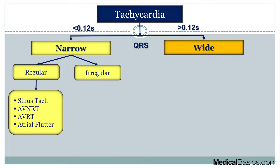When we're dealing with regular narrow complex tachycardia, the most common ones we're thinking about are AVNRT, AVRT, as well as atrial flutter. A lot of times people ask what's the most common cause of regular narrow complex tachycardia, and people often bring up AVNRT or atrial flutter. But really the most common one you can never forget about is sinus tachycardia — it's your most common form of tachycardia as well as your most common regular narrow complex tachycardia. It's kind of a trick question because people forget about it.